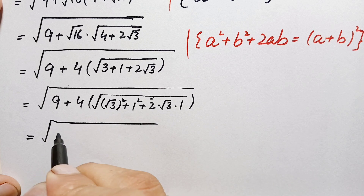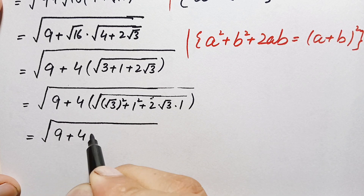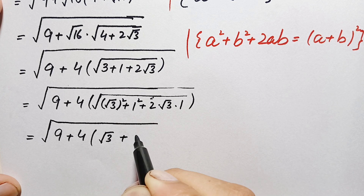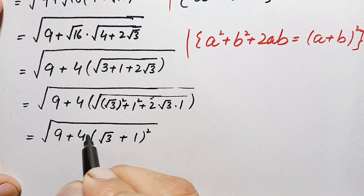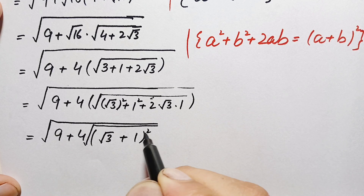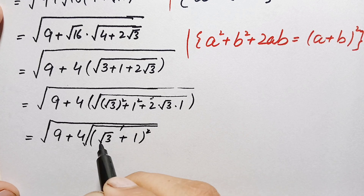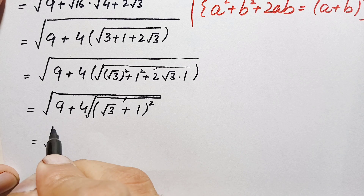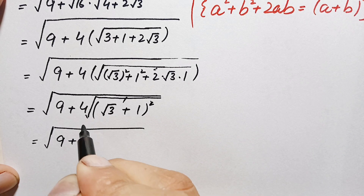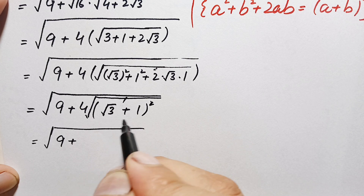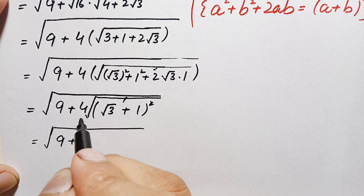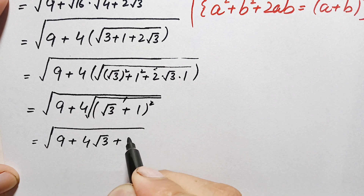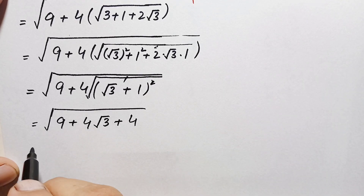So inside the brackets we get square root of 3 plus 1, whole squared. Taking the whole square root, the outer square root and the inner whole square cancel each other, leaving just square root of 3 plus 1. Then we multiply this power of 4 with these two numbers: 4 times square root of 3, plus 4 times 1 equals 4.